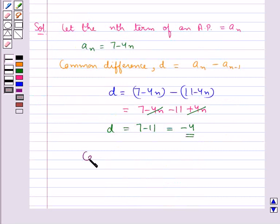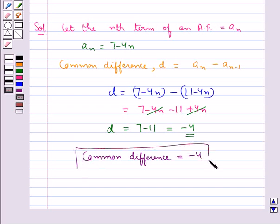Hence our final answer is common difference D is equal to minus 4. So this completes the session. Hope you have understood the solution of this question.